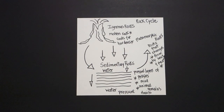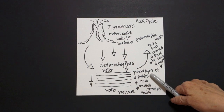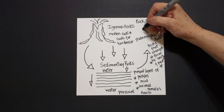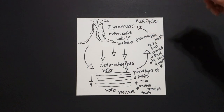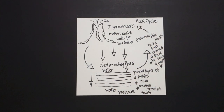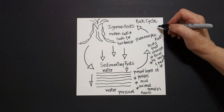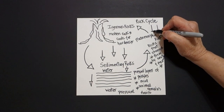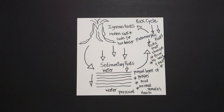Why is it called a cycle? Because igneous rocks and sedimentary rocks can become metamorphic rocks also. So I'm going to put another curved line and another triangle — this is the cycle. And because metamorphic rocks also change by pressure: straight line, triangle, straight line, triangle, straight line, triangle.